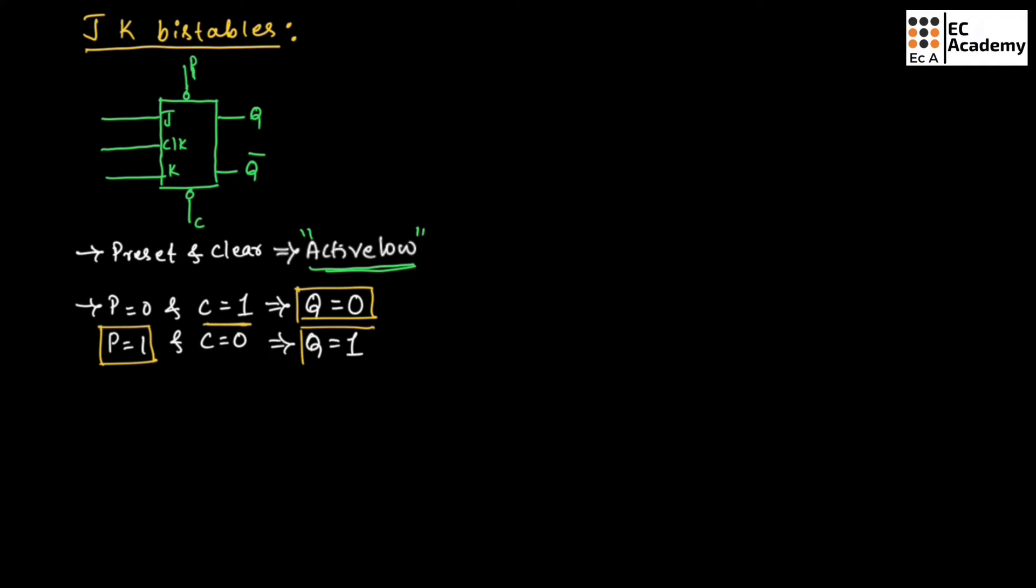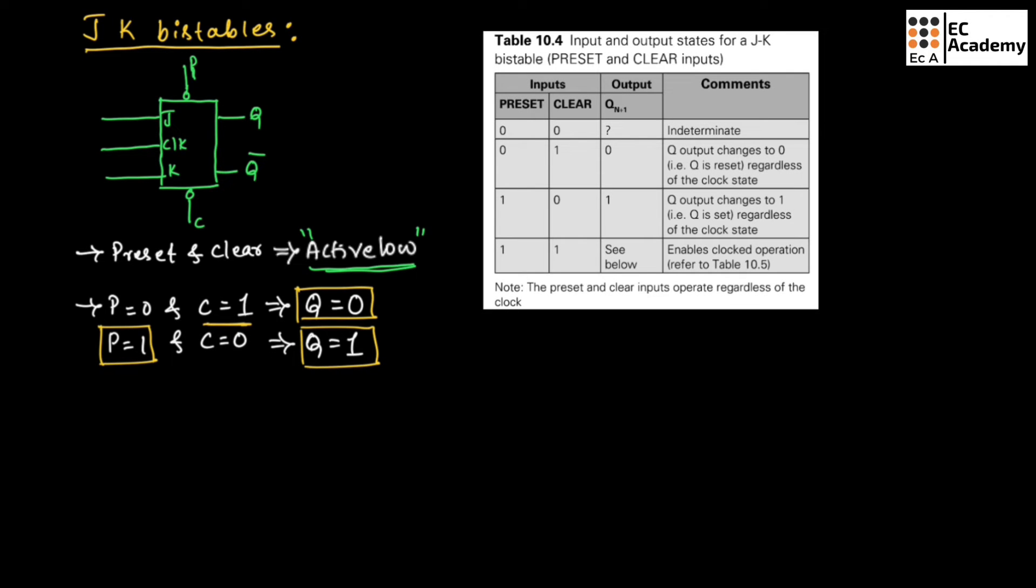Now, let us see the operation of JK flip-flop when preset and clear signals are applied. When preset and clear are 0, if both preset and clear are 0, the output is indeterminate, which means it is invalid. Which means we should not apply clear and preset 0 at a time. When preset is 0 and clear is 1, when preset is 0 and clear is 0, output is 1, output is set to 1.